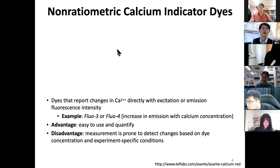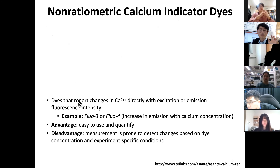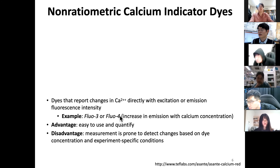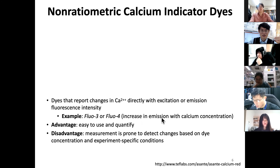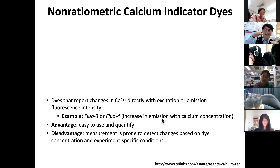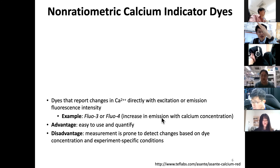Now let's talk about a simpler approach: non-ratiometric calcium indicator dyes. These are dyes that report changes in calcium concentration directly with excitation or emission fluorescence intensity. An example is the dye Fluo-3 or Fluo-4, which is described as super bright. It simply increases fluorescence emission as calcium concentration increases. The only caveat is that, unlike ratiometric methods, the relationship may not be totally linear.